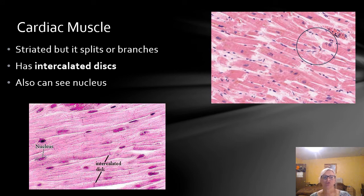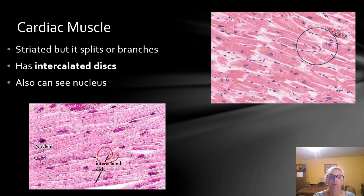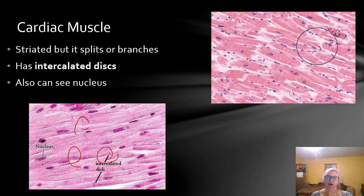Cardiac muscle tissue is striated but it will have splits or branches in it — you can see that in the top right picture where the circle is. The most defining feature for cardiac muscle is the intercalated discs — those little purple hash mark-looking lines. If you have intercalated discs, it is going to be cardiac muscle. You'll learn more about cardiac muscle during lecture and lab assignments, but remember: intercalated discs definitely means cardiac.